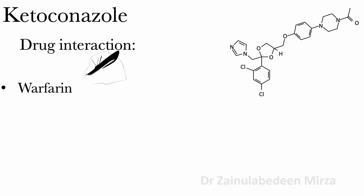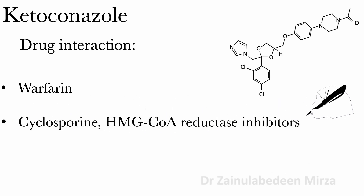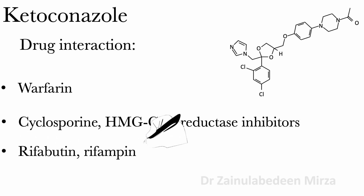Warfarin — ketoconazole may inhibit the metabolism of warfarin. Cyclosporine and HMG-CoA reductase inhibitors — ketoconazole may increase blood concentration and risk of hepatotoxicity of these drugs. Rifabutin and rifampicin may decrease blood concentration of ketoconazole.